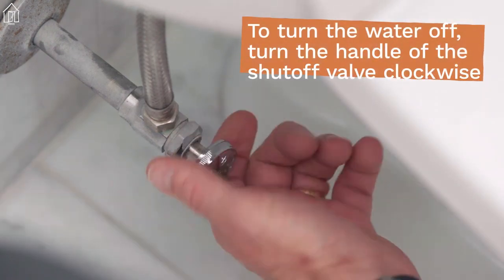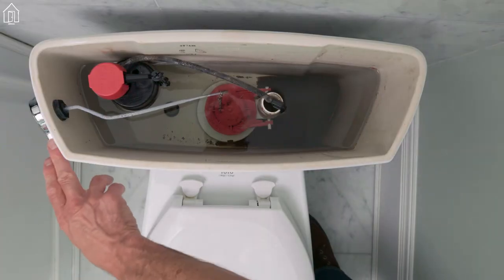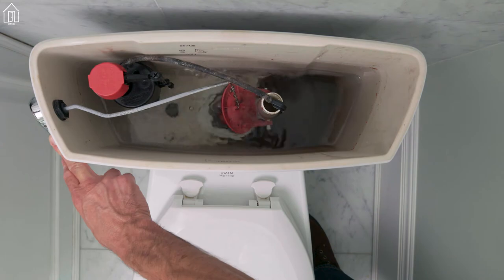The first thing you do is shut off the water. Then you just flush to empty the tank and hold the flapper up until most of the water is gone.